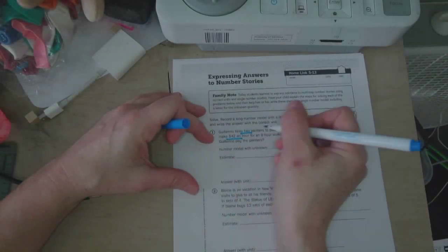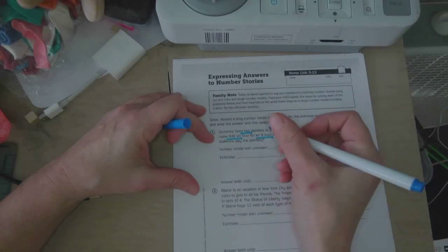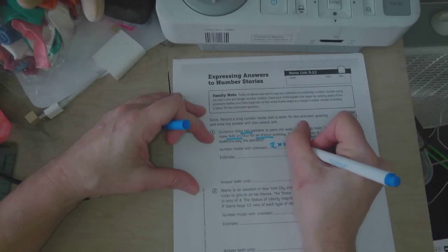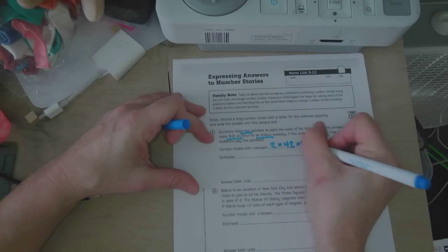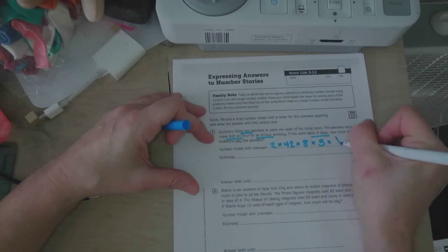Two painters, $42 an hour, 8 hour work day, 3 days. Two painters making times $42 an hour, times 8 hours, times 3 days, equals x.